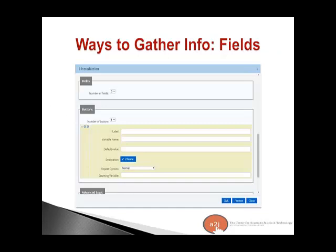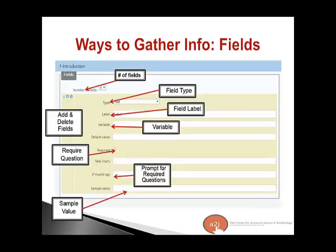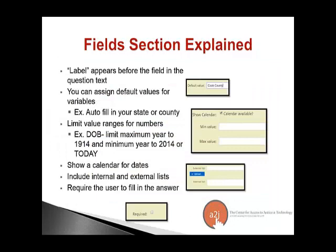The ways to gather information from your end user: one is fields. Fields allow your end user to type something in, and you can have multiple fields. You can add and delete fields, set the field type and field label, associate a variable with the field, and set whether it's required. If they don't answer a required field, you can customize what the guided interview says — for example, 'you must fill in your social security number to move forward.' The label is what appears before the field in the question text. The default value lets you pre-populate a field.